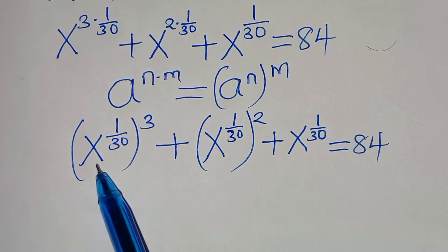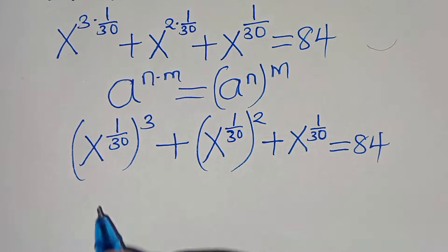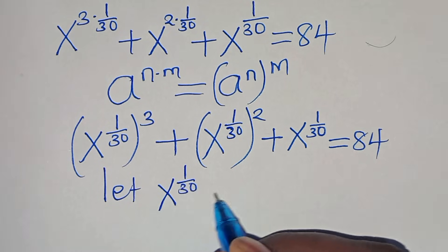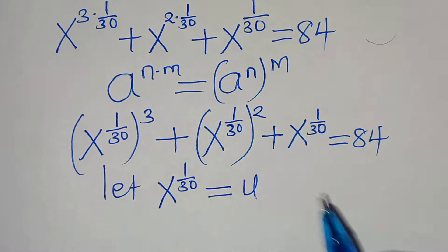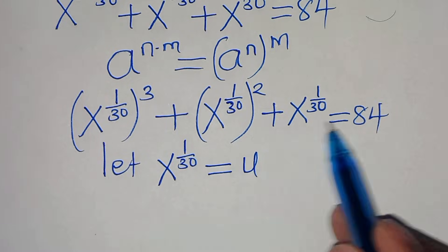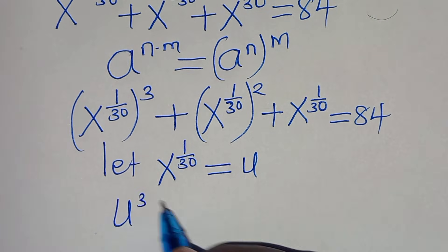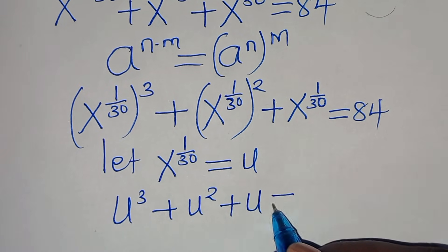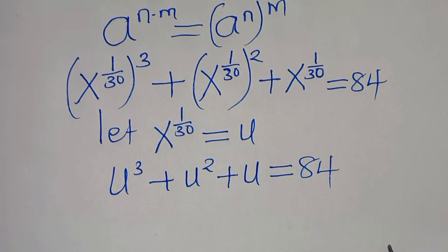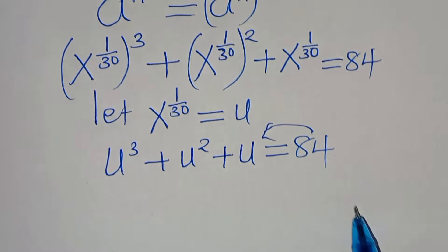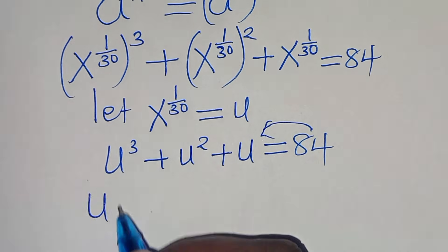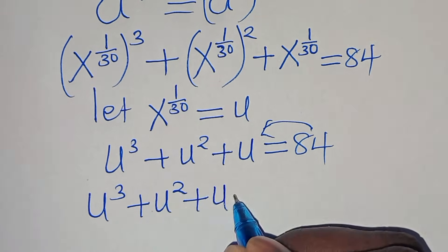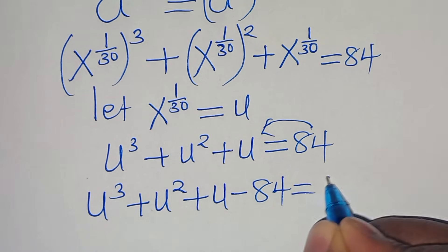Since x to the power of 1 over 30 is common, we let x to the power of 1 over 30 equal u. Substituting u back into the equation gives us u cubed plus u squared plus u, equal to 84.